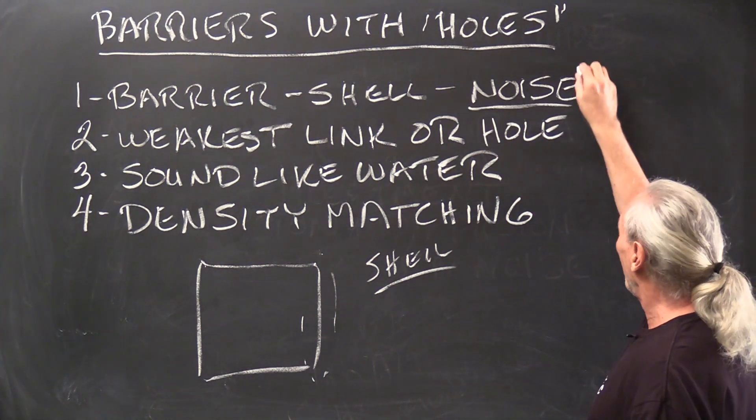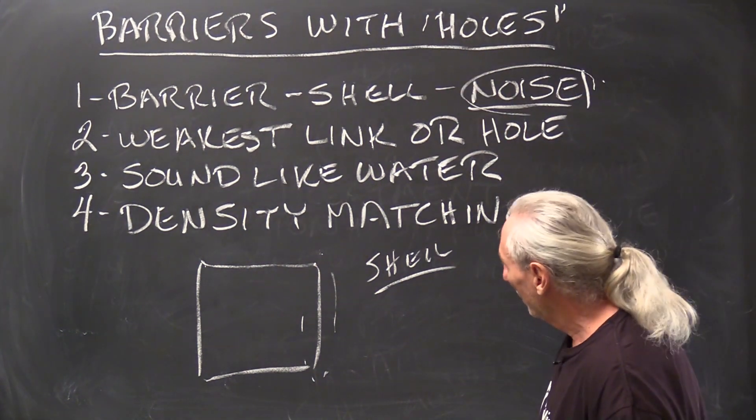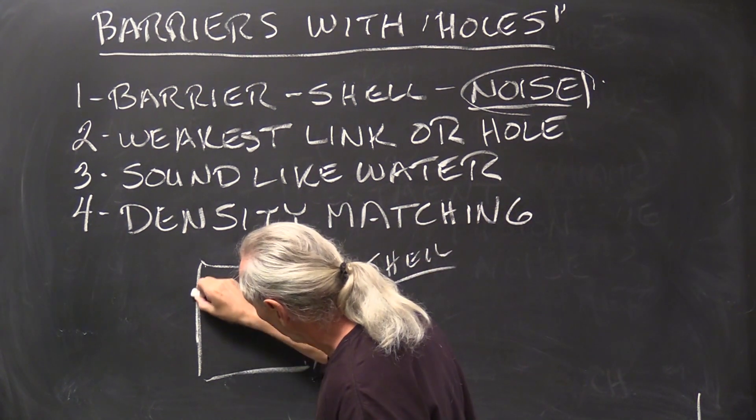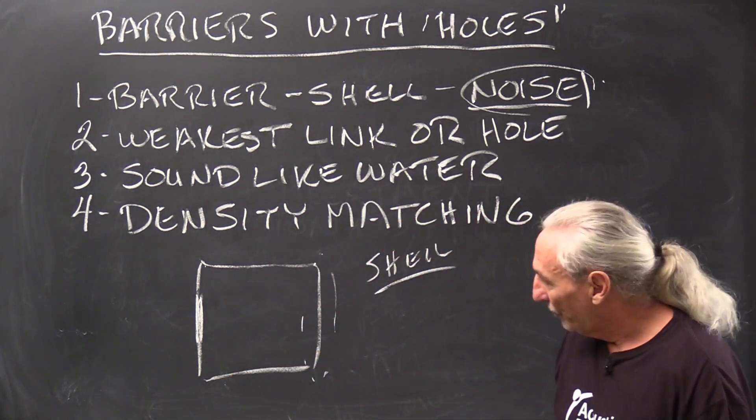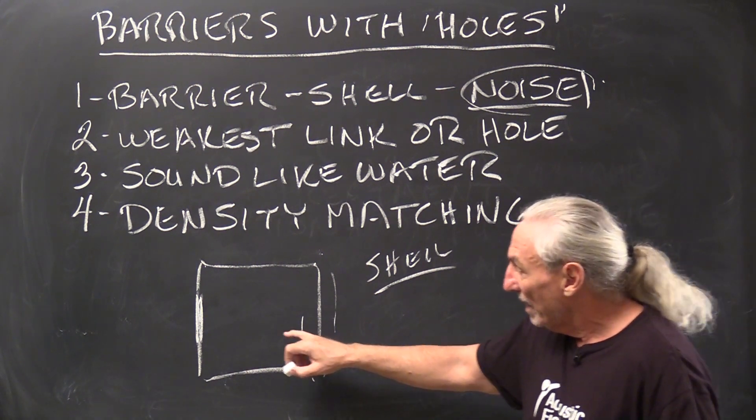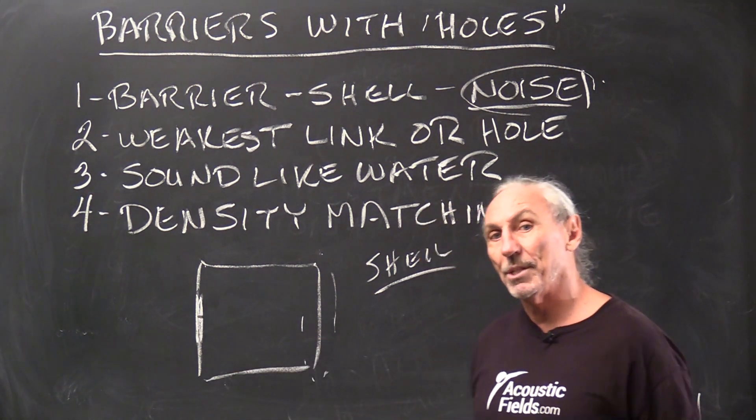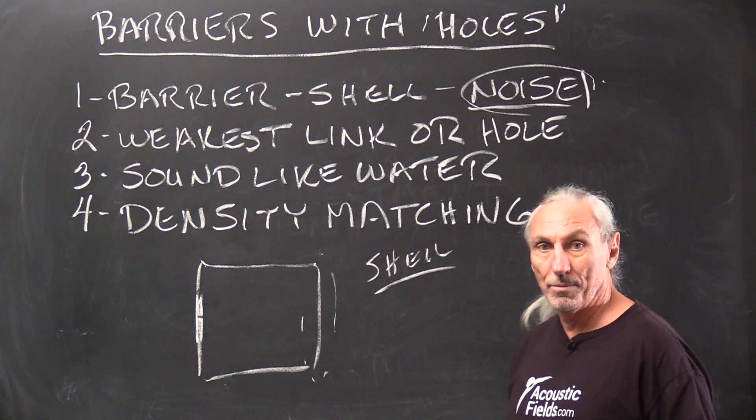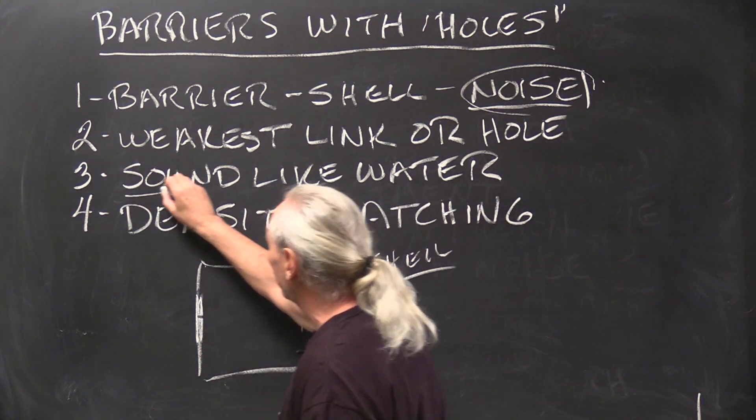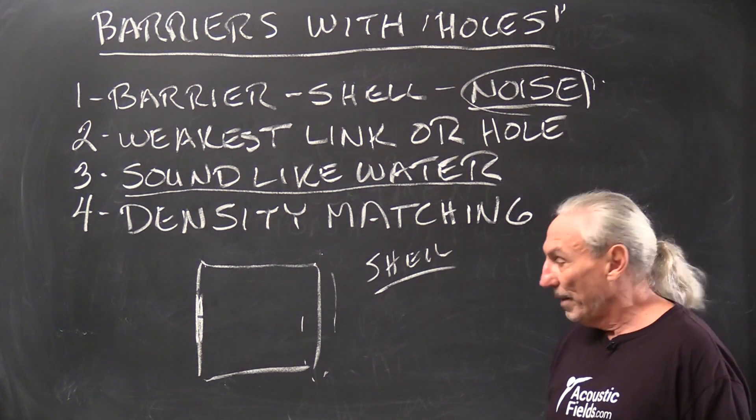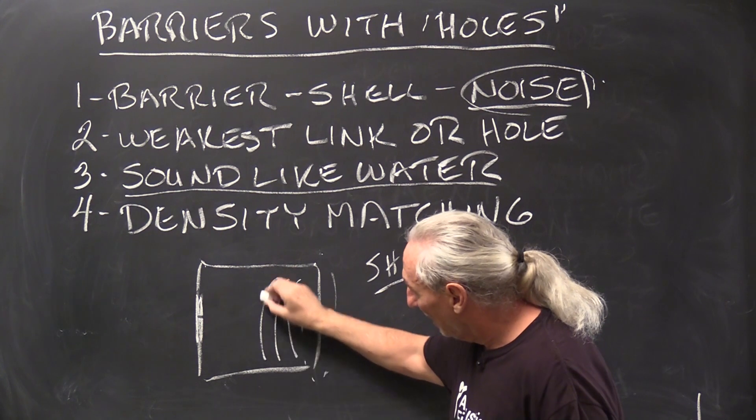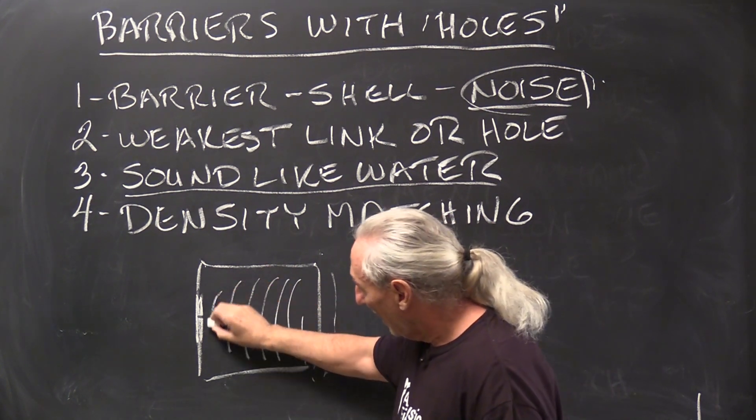How does the shell work with noise? Well, a lot of rooms have windows. So they could have 2x4, 2x6, 2x8 frame, it could be concrete and then they have windows. This is a common situation in rooms today. And we have to remember that sound is like water. It will find the weakest link and go through it.